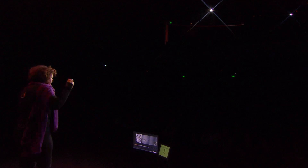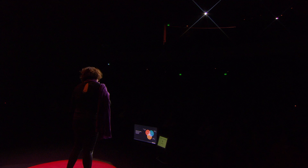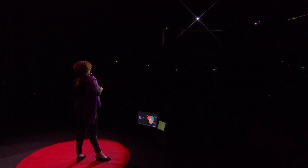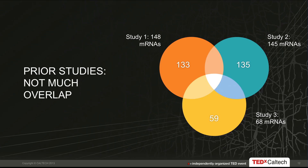How ubiquitous is this distributed process? To understand that, you really want to know how many different proteins could be synthesized out in the processes — meaning, what is the population of messenger mRNAs there? Looking at three big prior studies, they had identified about 100 mRNAs. But we asked how much overlap there was between those studies, and were quite surprised to see there was not a single mRNA identified by all three studies. That suggested maybe there was something left to learn.